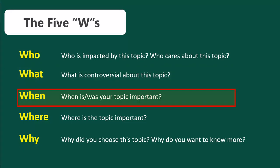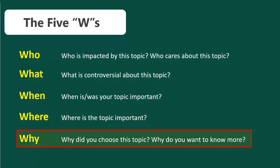When was your topic important? Is it still happening? When was the information about this being published? You may need to add in a date limiter to get more relevant search results. Where is this topic important? Is it a local problem where you would need to look in a local newspaper? Is this a national problem? Do you need to look for research from scholars in another country? Why did you choose this topic? Why do you want to know more? Thinking about these questions should hopefully help you narrow down what you still need to find and where to look for it.